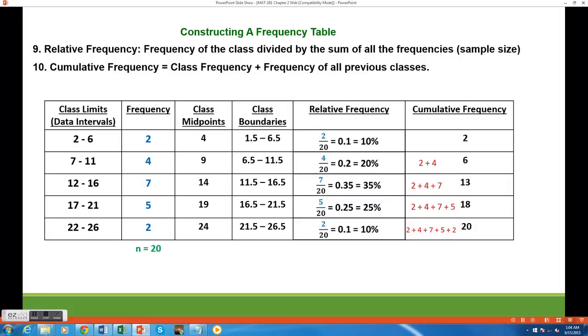The last two columns deal with relative frequency and cumulative frequency. Relative frequency is the proportion or percentage of data that falls in each class range.